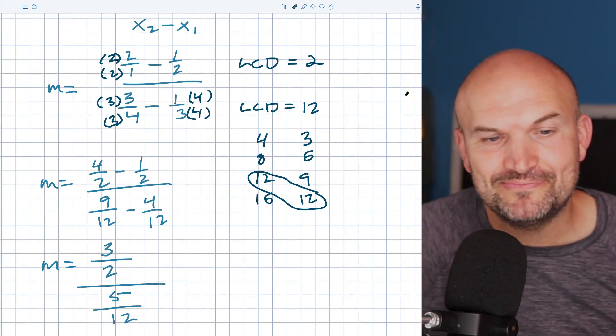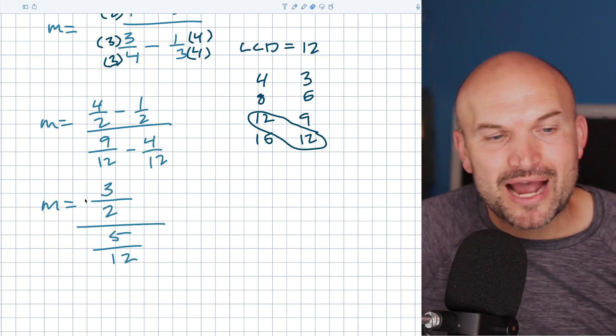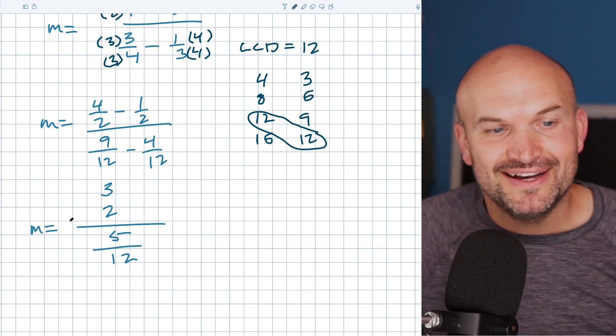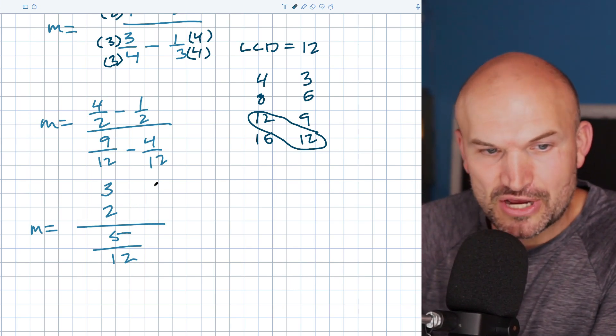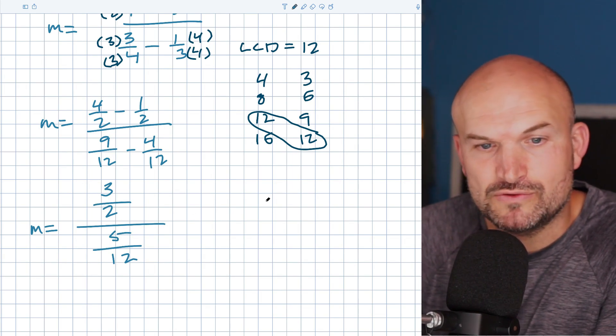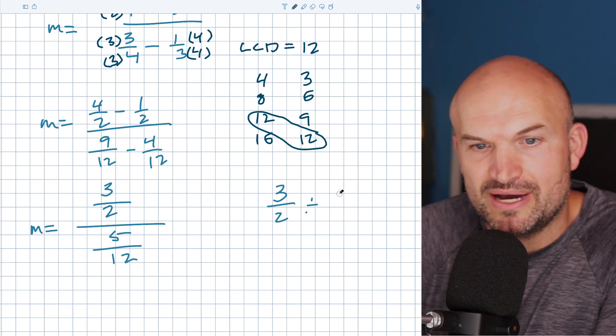And you say, all right, there's your slope, but your teacher's probably not going to like that as your slope. And I think especially if we had to graph that or do anything like that, it'd be kind of confusing. So the other thing I want you to think about this is this is really a 3/2 divided by 5/12, right? Remember this, it's like 3/2 divided by a 5/12.